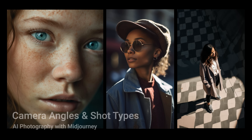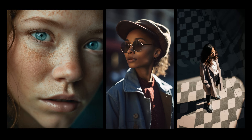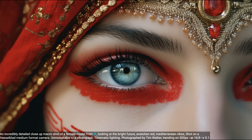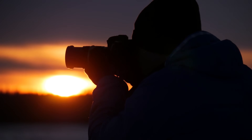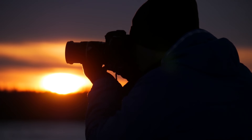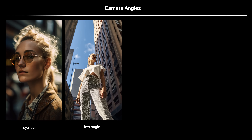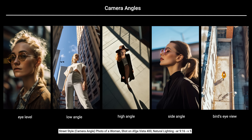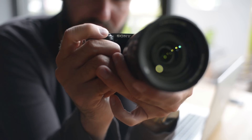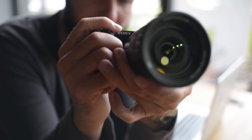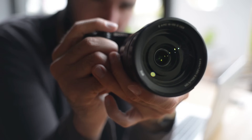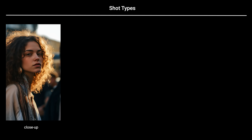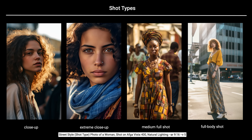Camera angles and shot types are distinct but interconnected components of both photography and cinematography. They work synergistically to produce a desired visual impact, and each plays a unique role in the composition and narrative of an image or scene. Camera angles pertain to the position of the camera in relation to the subject. Some well-known examples are high level, low angle, high angle, side angle, and bird's eye view. Shot types, on the other hand, define how a subject is portrayed and are mainly determined by the camera's proximity to the subject. Some examples are close-up, extreme close-up, medium full shot, and full body shot.